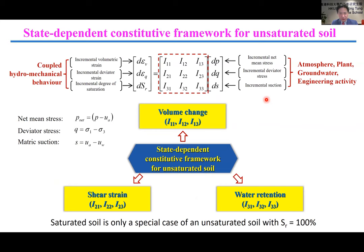In this unified and simple framework, net stress and matrix suction are used for simplicity. Net stress is defined as the difference between total stress and pore air pressure. Matrix suction is calculated as the difference between pore air pressure and pore water pressure. By adopting net stress and matrix suction, the constitutive formulation for unsaturated soil can be expressed in a generalized incremental form as shown here. All I-ij terms, where i and j each equal 1, 2, or 3, are state-dependent variables.